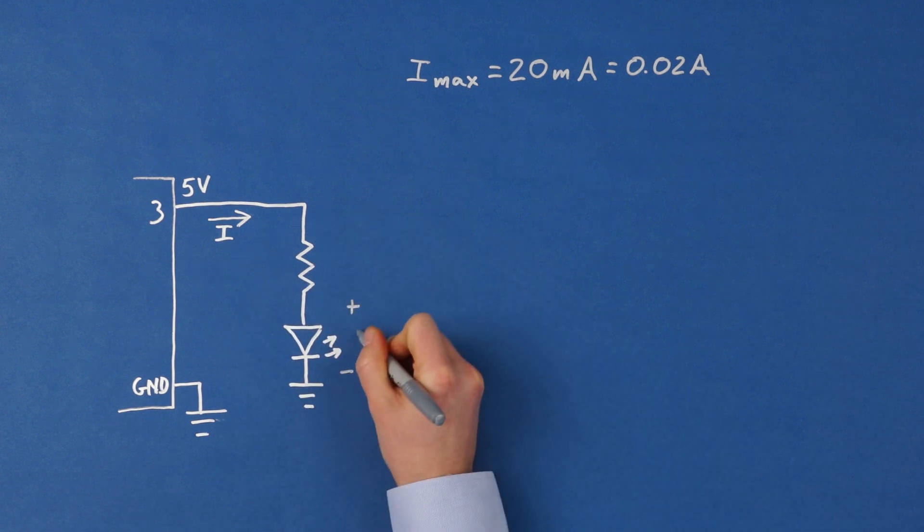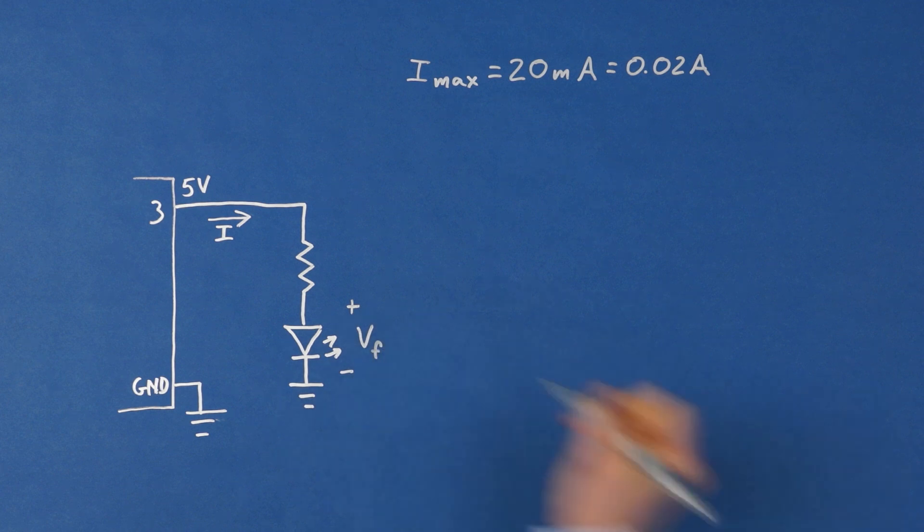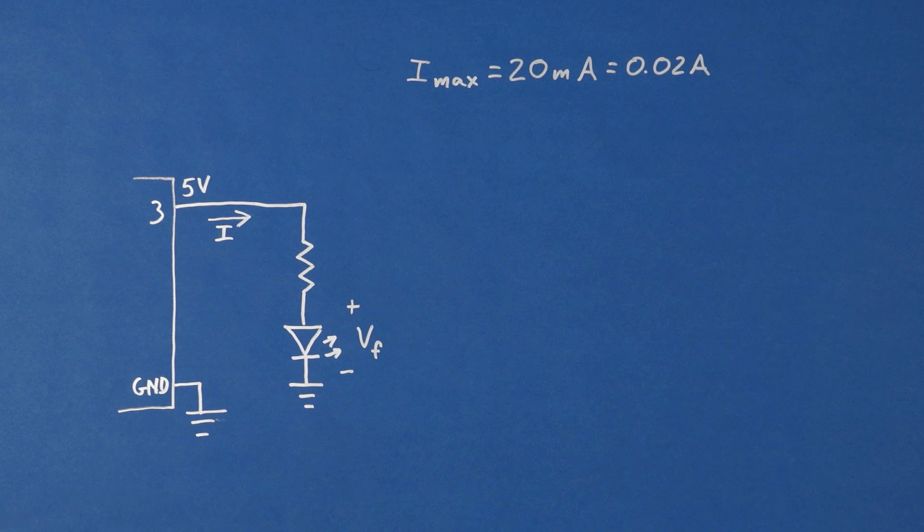LEDs have a forward voltage. This is the minimum voltage necessary to turn the LED on. Once that voltage is reached, the voltage across the LED will stay at about that level regardless of how high the supply voltage goes.